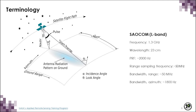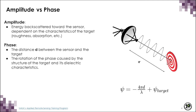The PRF is 2 kilohertz. Its sampling rate in the range direction is 50 megahertz, and its bandwidth is 50 megahertz in the range direction and 1800 megahertz in the azimuth direction. The SAR image has information on amplitude and phase. The amplitude is related to the energy backscattered towards the sensor, which is dependent on the characteristics of the surface targets such as roughness, absorption properties, and other factors. The phase, which is what we'll be discussing during this course, provides information on the distance between the target and the sensor.